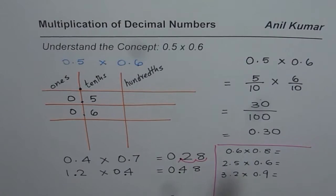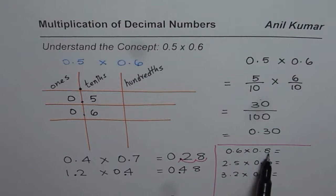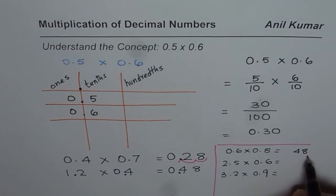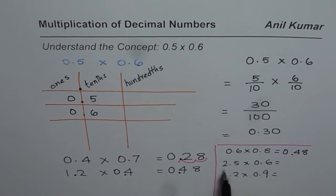Here is how you will do it. You know decimal, after decimal there should be two numbers. 6 times 8 is 48. So you will write 48 and put decimal so that you have two numbers after decimal. 0.48 is your answer.